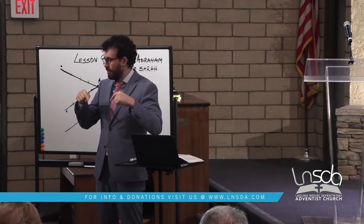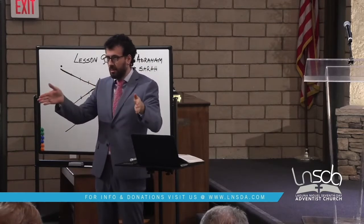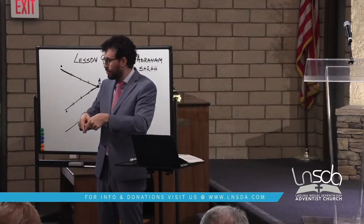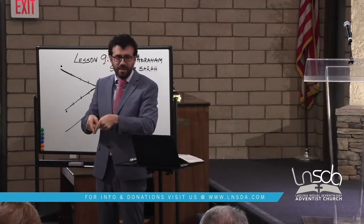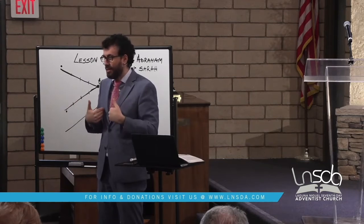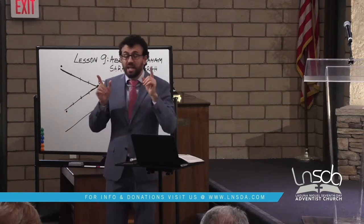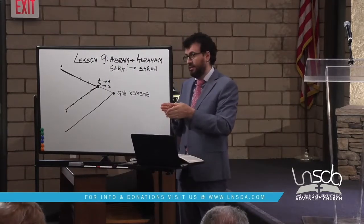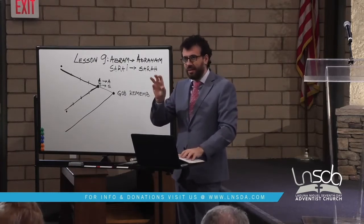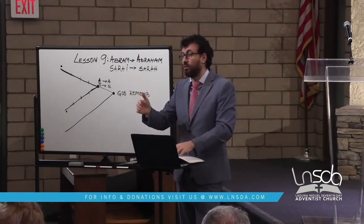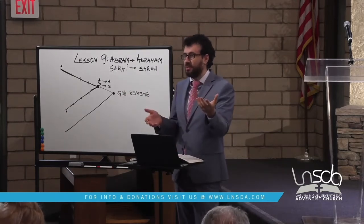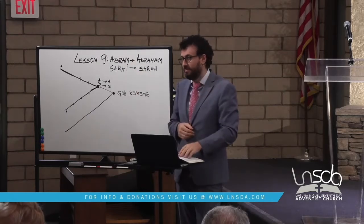Instead of God having Abraham walk through the cut animals, God himself walks through them, telling Abraham, 'If I ever let you down, this is what should happen to me.' That's the concept of the covenant cut by God between him and Abraham. And it has connections to the fact that the Messiah, according to the book of Daniel, was at one point cut off. At the cross the Messiah was, so to speak, cut off.